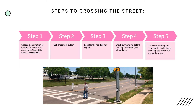There are five steps to crossing the road. The first step is to choose a destination to walk to by foot. Once you do that, locate a crosswalk. Step two is to push the crosswalk button. After that, step three is to stop at the end of the sidewalk and look for the hand or walk signal.